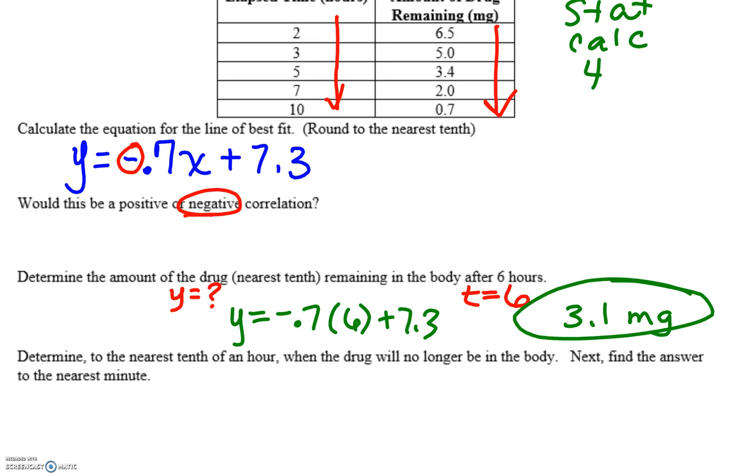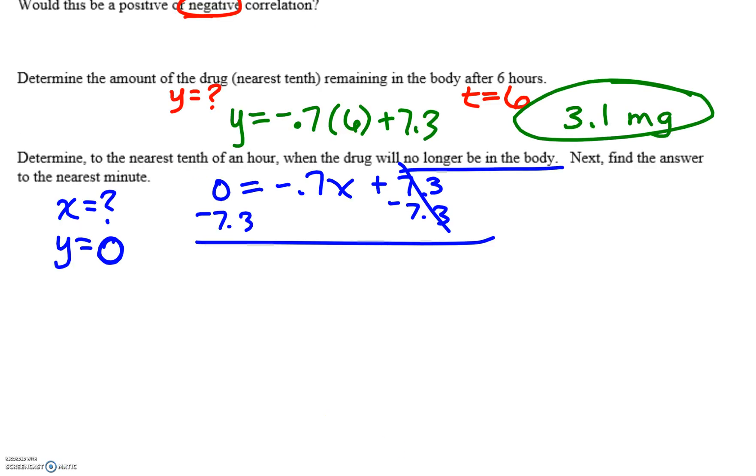And then the last part says, determine to the nearest tenth of an hour. So the hour, we don't know, that's what we're looking for, when there will no longer be a drug in our body. So when there's no longer anymore, that's zero. So we're going to replace our y value with zero. And we're going to solve for x. So subtract the 7.3. So negative 7.3 equals negative 0.7x, divide by negative 0.7, and we get x equals 10.4.